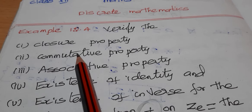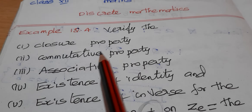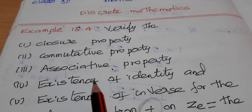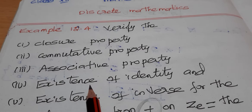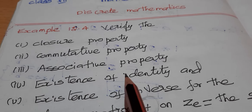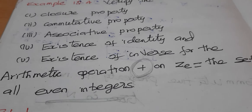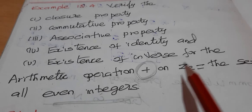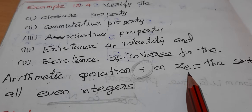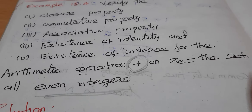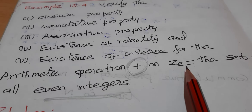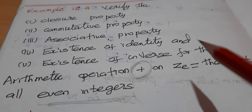We will verify the closure property, commutative property, associative property, identity, and inverse for the operation addition on Z_e, where Z_e is the set of all even integers.